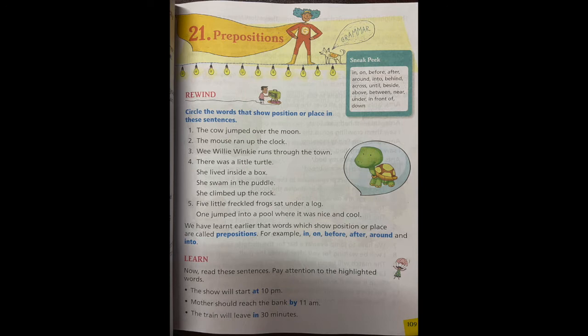First one: the cow jumped over the moon. So here what is the position of the cow? It is over. Yes, over is the word which is showing the position when compared to moon, so circle over. The mouse ran up the clock. Where did the mouse ran? Up. Up is the position, so circle up.